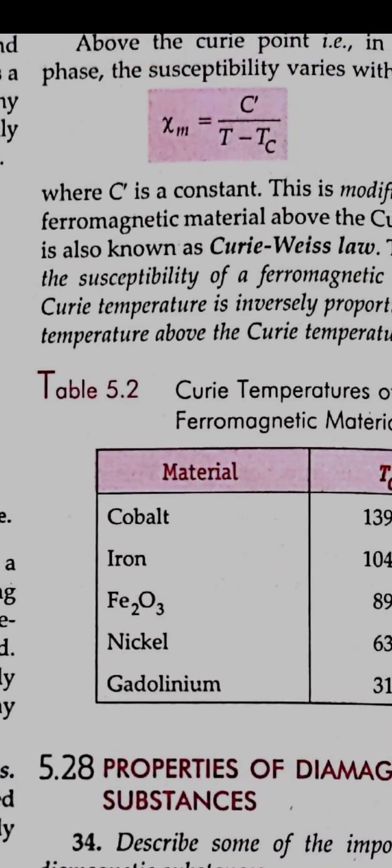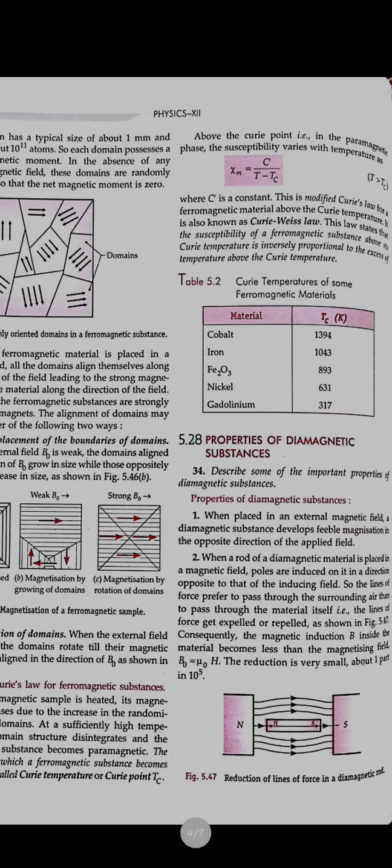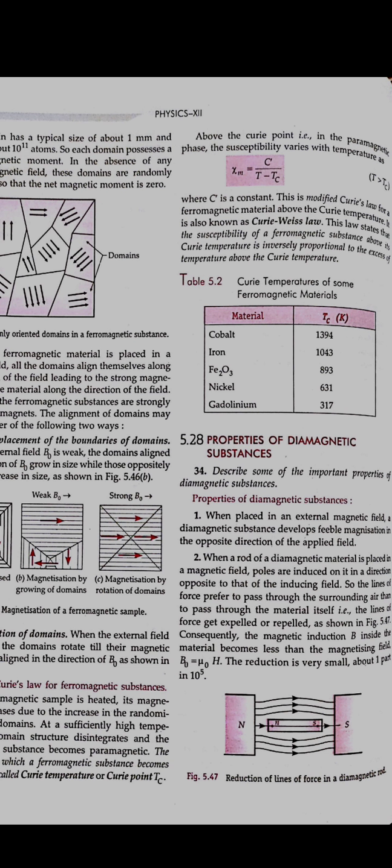Today we will see the properties of diamagnetic, paramagnetic, and ferromagnetic substances. When an external magnetic field is applied, diamagnetic substances develop a very less magnetization in the opposite direction of the magnetic field. They get repelled from the magnet and try to align themselves opposite to the direction of the magnetic field. Therefore, the magnetic induction B inside the diamagnetic material becomes less than that of the magnetizing field H.